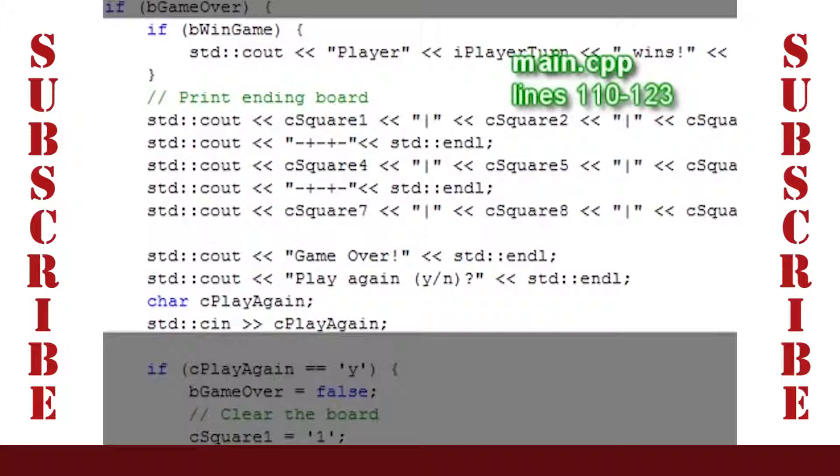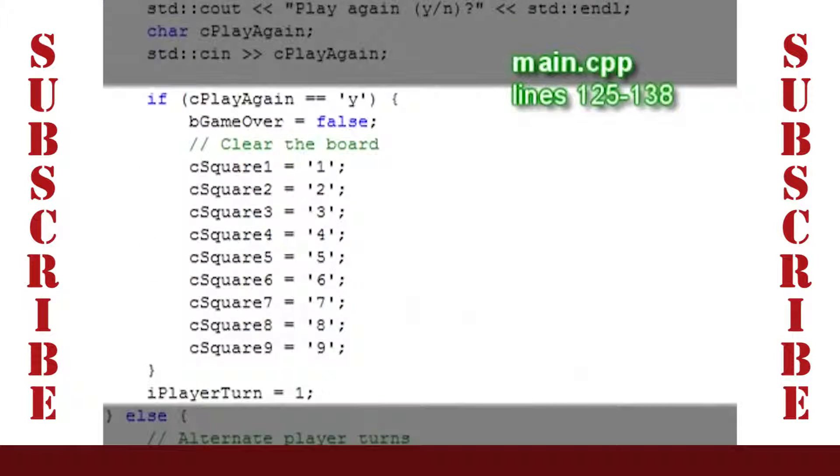We ask whether the players want to play another game. If the players choose to continue playing, the game over flag is set to false to continue looping and the board is reset. The player's turn is also set back to player one.